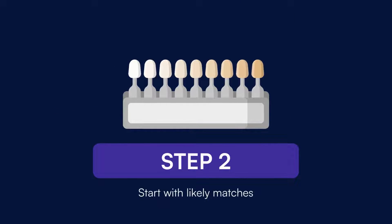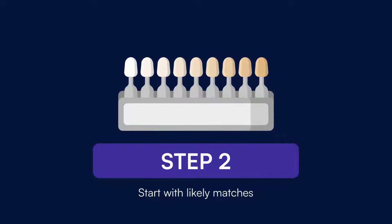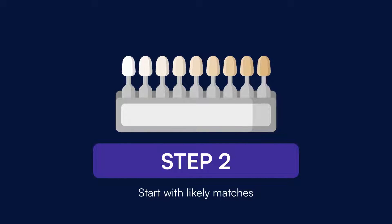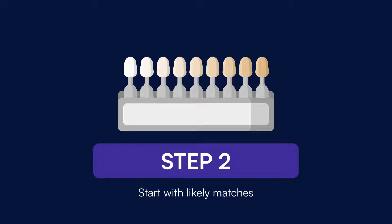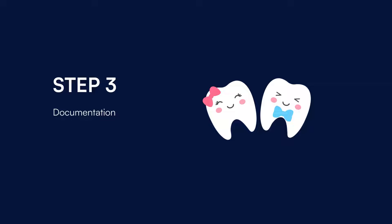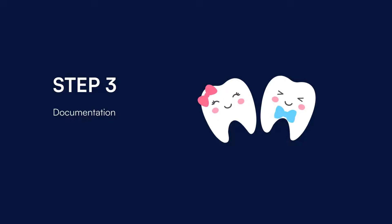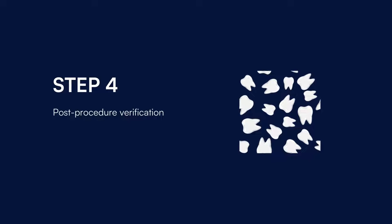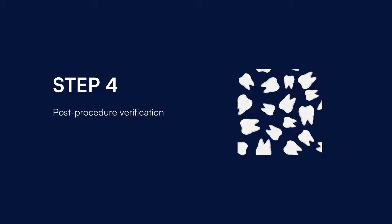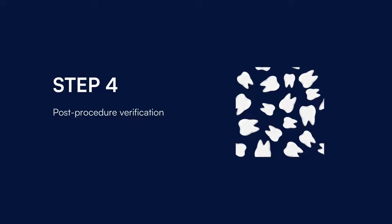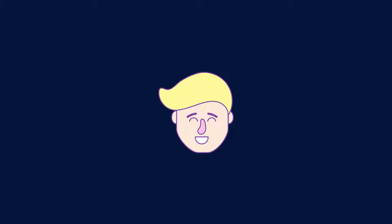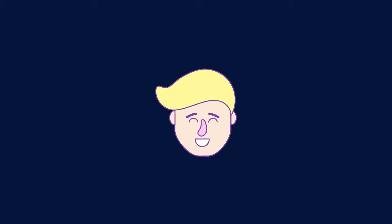Commence by pinpointing a few shades that seemingly align with the tooth's colour. By narrowing down these initial options, the process becomes more streamlined, making it easier to identify an exact match. Once the most accurate shade has been identified, note it down. After dental treatments, revisiting the colour chart is wise. Re-evaluating the tooth shade can confirm that the dental work aligns seamlessly with the natural colour, ensuring aesthetic consistency and patient satisfaction.